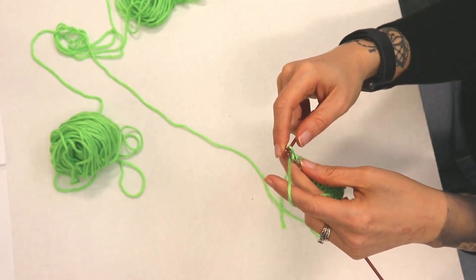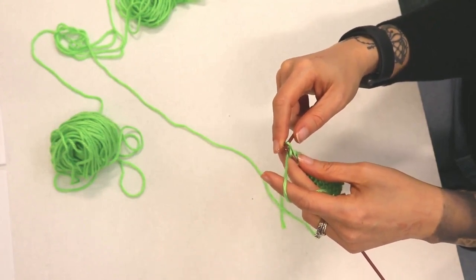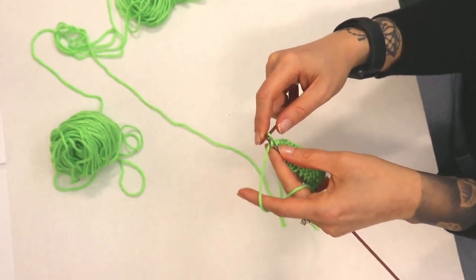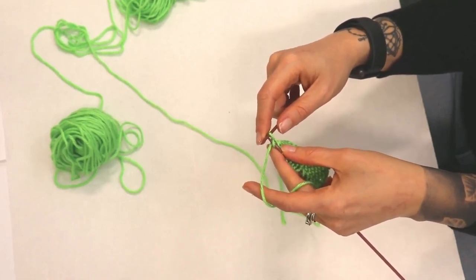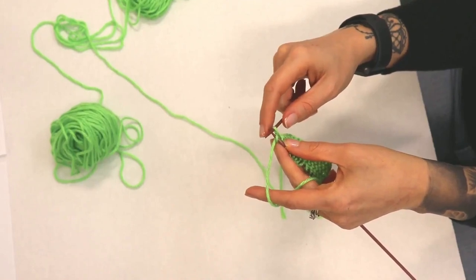Slip the cast-on stitch off the left needle while holding your middle finger against the second stitch to ensure that it does not also slip off. The stitch on the right needle is the newly formed stitch.